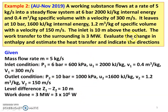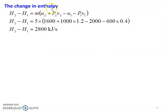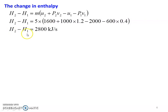To calculate change in enthalpy and estimate the heat transfer and indicate direction. Change in enthalpy: H2 minus H1 equals M into (U2 + P2·V2 − U1 − P1·V1). Substituting: U2 is 1600 plus 1000 into 1.2 minus 2000 minus 600 into 0.4. The change in enthalpy is 2800 kilojoules per second.